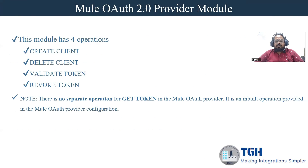The OAuth 2.0 provider module contains four operations: create client, delete client, validate token, and revoke token. One thing to note is that there is no separate operation for getting the token — it has a built-in operation provided in the Mule OAuth provider configuration. Now let us see how to implement this Mule OAuth 2.0 provider in Anypoint Studio, then how to deploy it and utilize it for giving access to an already exposed API.